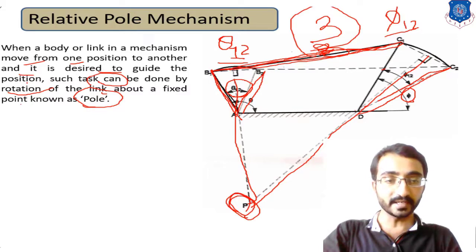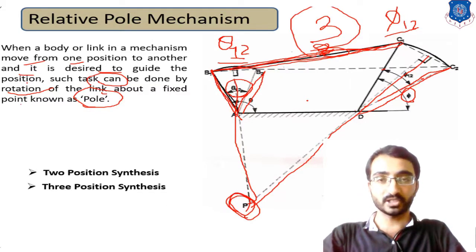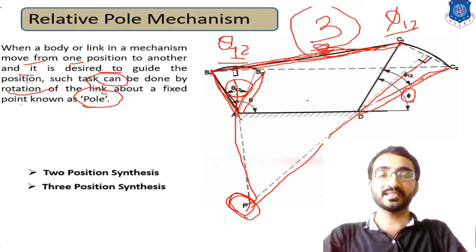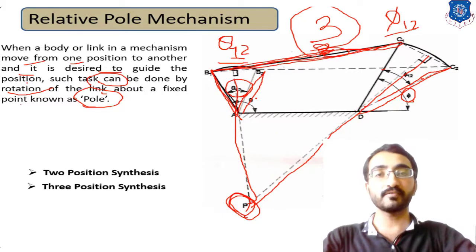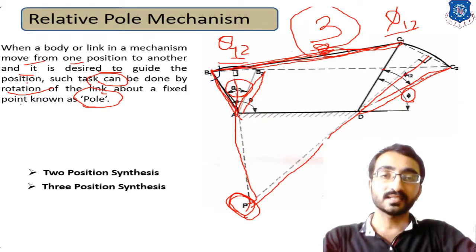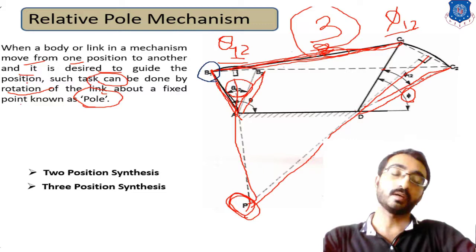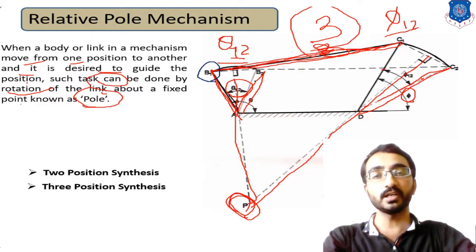The relative pole method is mainly divided into two types: two-position synthesis and three-position synthesis. Two-position synthesis means we are familiar with two positions of a mechanism. In this case, we have two positions — initially the mechanism is at position B1, then it moves to position B2.